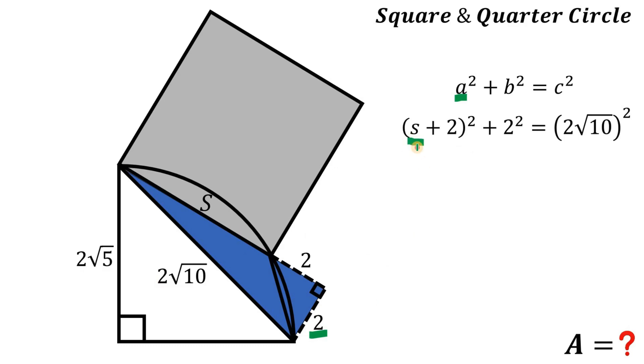Now the goal is to find the value of s. Let's simplify: 2 squared and 2 times square root of 10 raised to the power of 2—this is just 4 and 40. Subtract 4 on both sides, and now get the square root on both sides. Take note that s cannot be a negative number, so we don't care about the negative value of square root of 36.